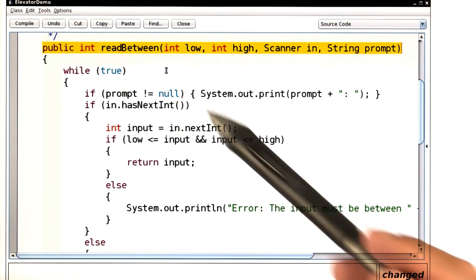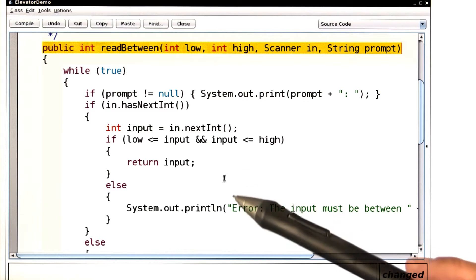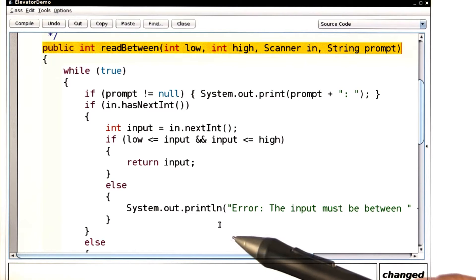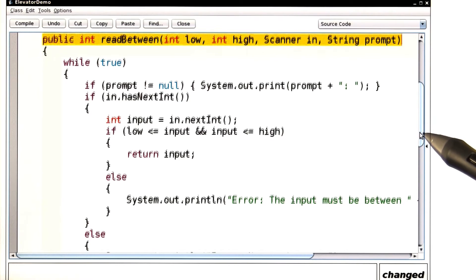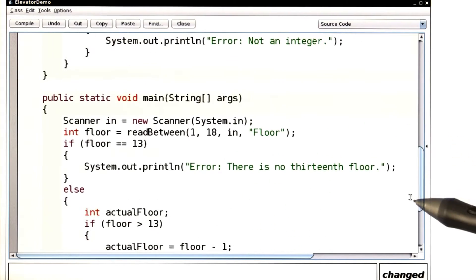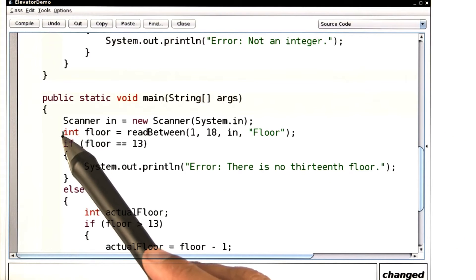This method keeps reading an integer until it finds one that is within the desired range, and then it returns it. The exact code isn't really important right now. You can have a look at it in the code distribution if you want to. And now here, I'm calling it,